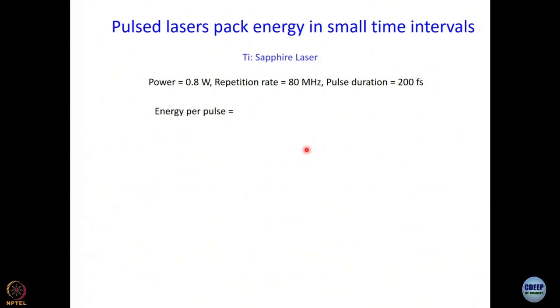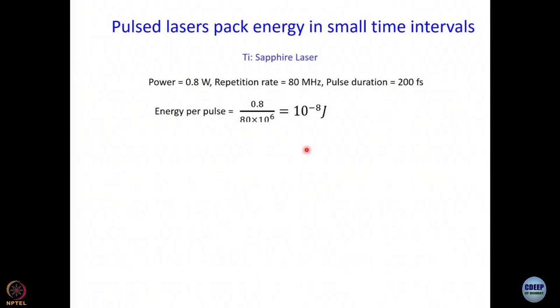Total energy per second is 0.8 joule, number of pulses per second is 80 × 10⁶. Energy per pulse equals energy in one second divided by number of pulses per second — that comes to 10⁻⁸ joule. Now another question: what is the number of photons per pulse? Energy of one photon is hν = hc/λ. For our 800 nm photon, we need to divide energy per pulse by energy per photon.